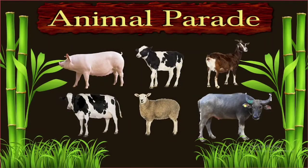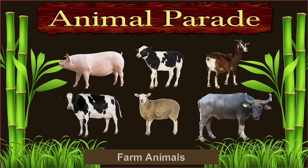I want you to take a look at these pictures — we have an animal parade. Observe the pictures. We have various animals here, but they are not just animals; they are what we call farm animals. We have a pig, a calf, a goat, a cow or adult cattle, a sheep, and lastly a carabao. What do you think is the relation of these farm animals in our lives?